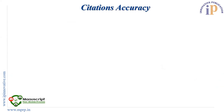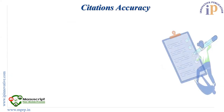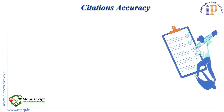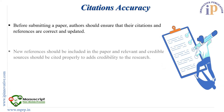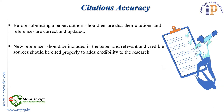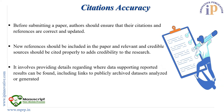Citations accuracy: Before submitting a paper, authors should ensure that citations and references are correct and updated. New references should be included and relevant, credible sources should be cited properly to add credibility to the research. It involves providing details regarding where data supporting reported results can be found, including links to publicly archived databases and datasets analyzed or generated.